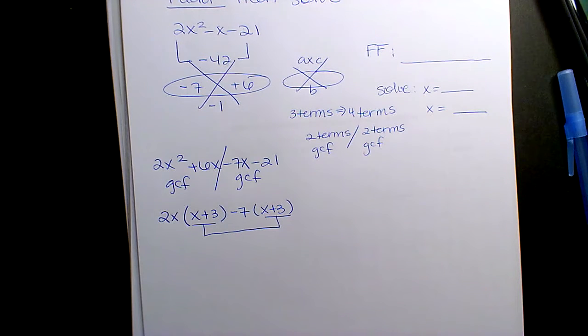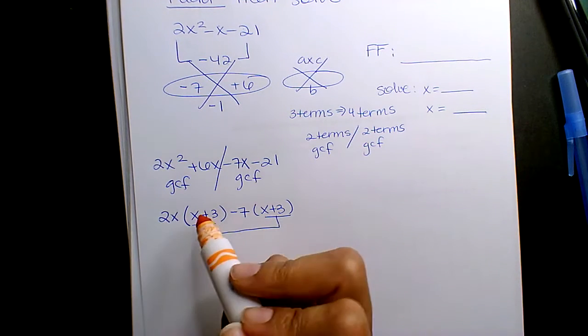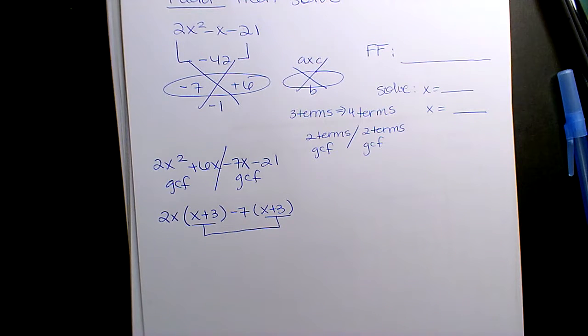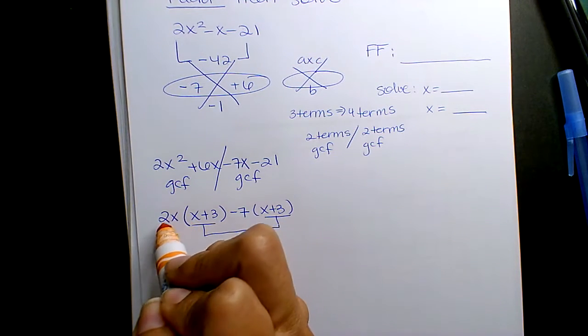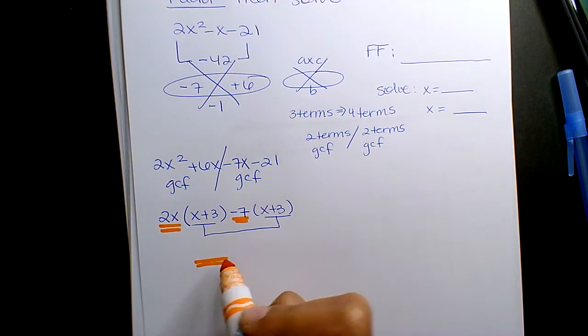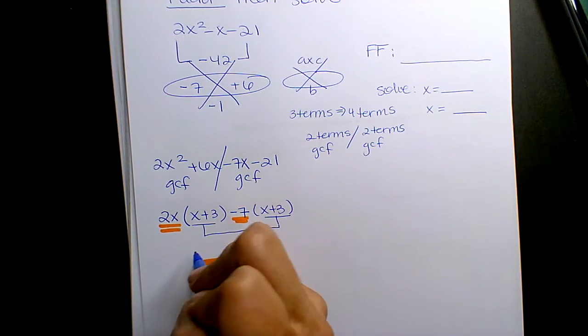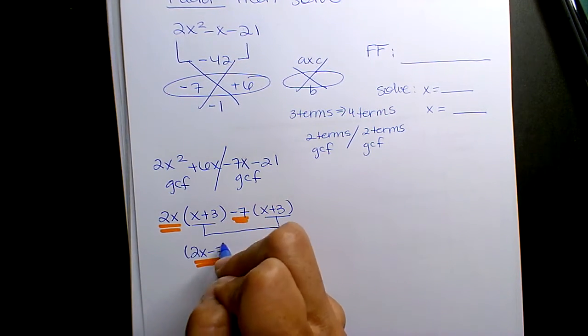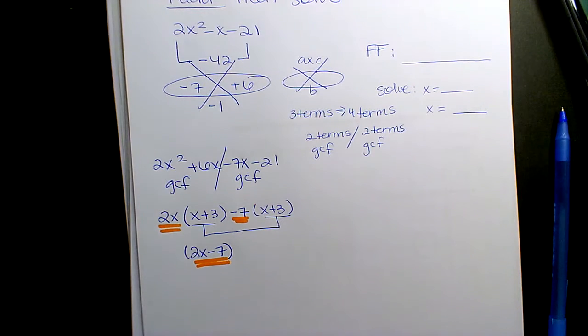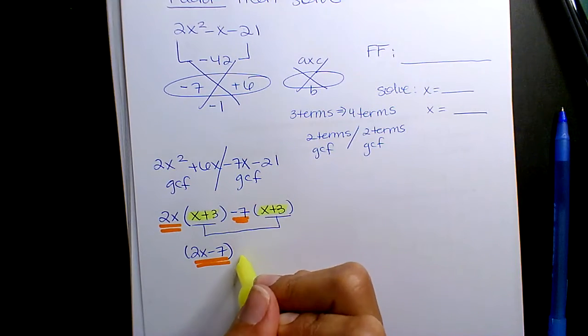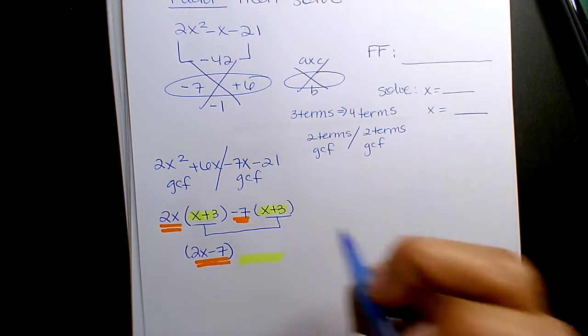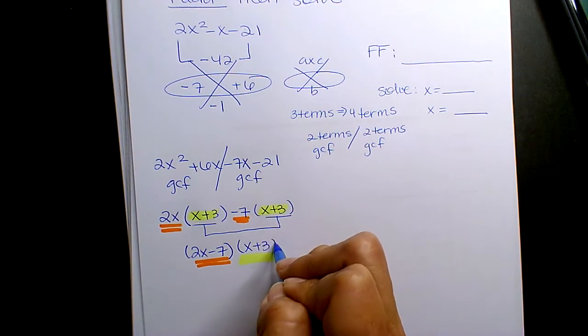This is now how you grab your two binomials. You essentially GCF again. And so, look. These two GCFs are gonna form one binomial, 2x minus 7. The repetitive, this one forms the other one binomial, x plus 3, and that's it.